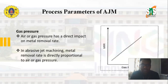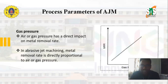The next important parameter in AJM processes is gas pressure. Air or gas pressure has a direct impact on metal removal rate. In abrasive jet machining, metal removal rate is directly proportional to air or gas pressure — that means if we increase the pressure of air or gas, the metal removal rate goes on increasing. This is clearly explained in the graph shown in the diagram.